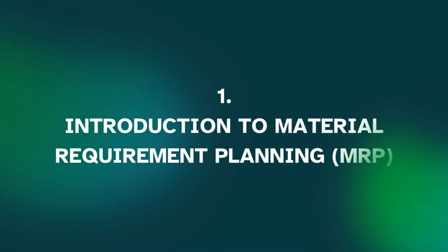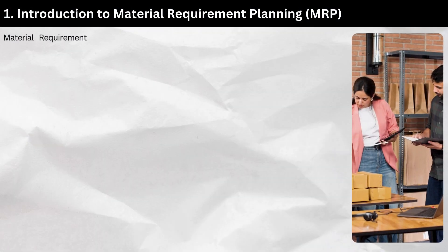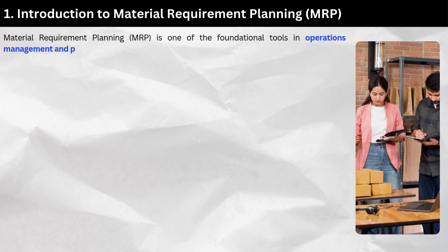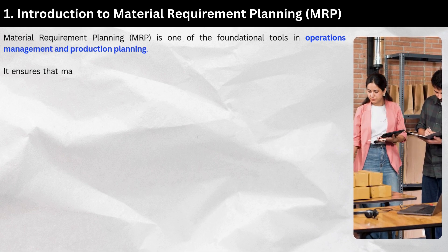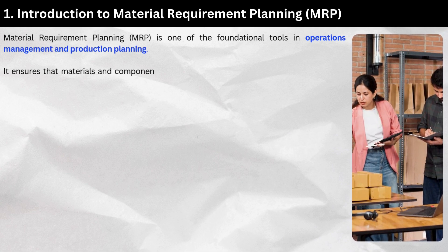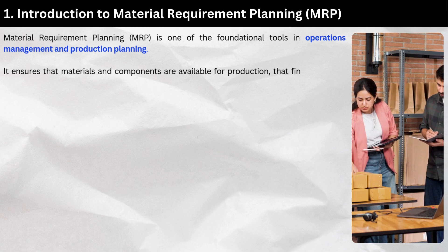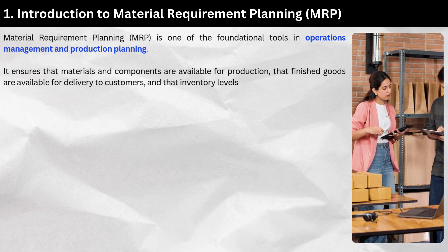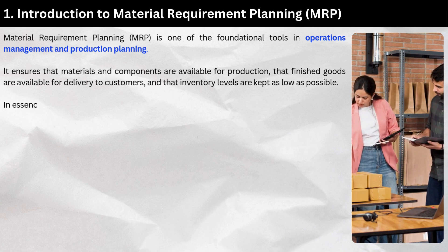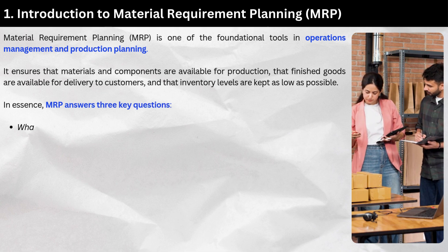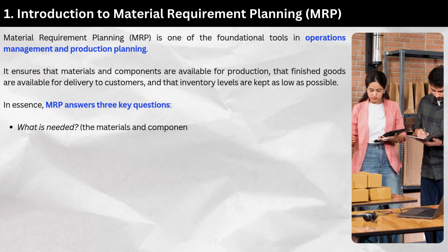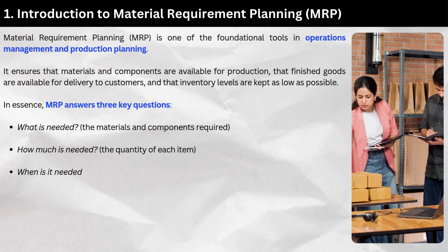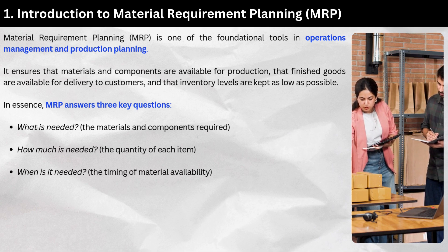Introduction to Material Requirement Planning, MRP. Material Requirement Planning (MRP) is one of the foundational tools in operations management and production planning. It ensures that materials and components are available for production, that finished goods are available for delivery to customers, and that inventory levels are kept as low as possible. In essence, MRP answers three key questions: What is needed — the materials and components required. How much is needed — the quantity of each item. When is it needed — the timing of material availability.